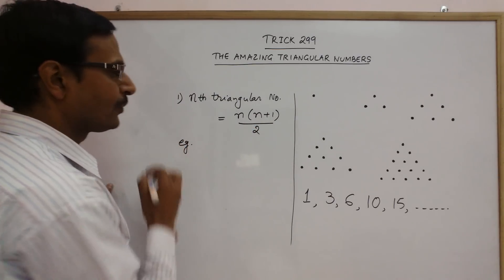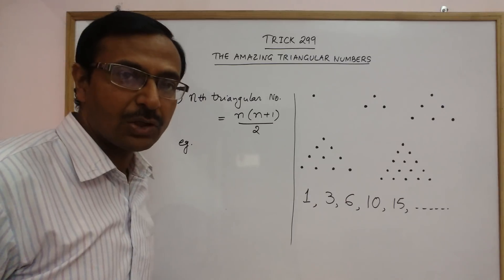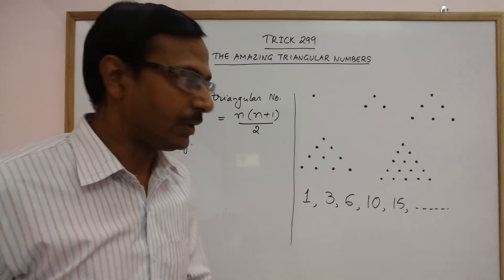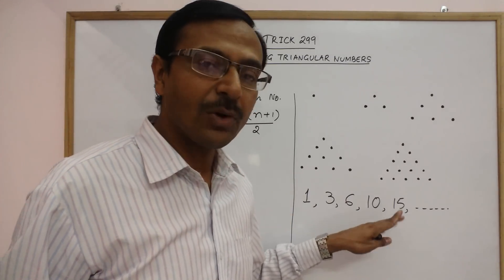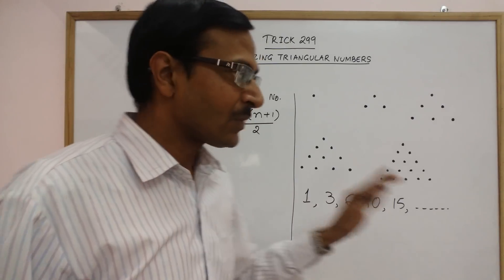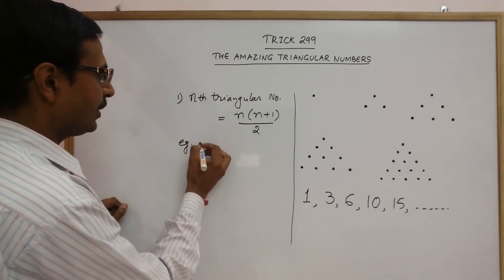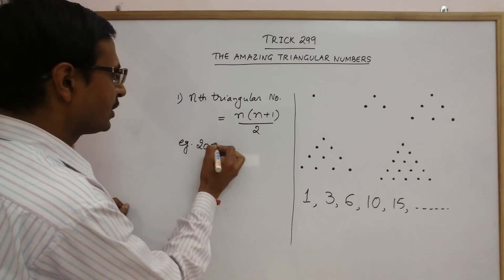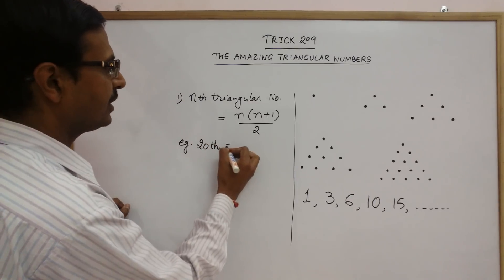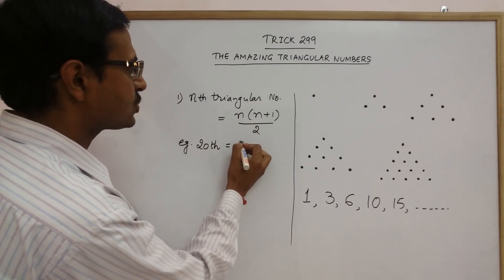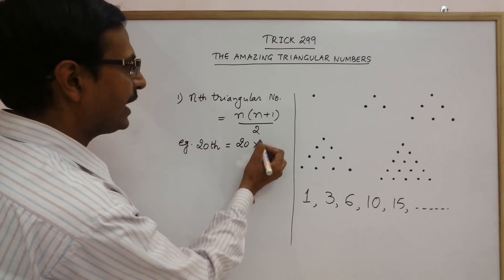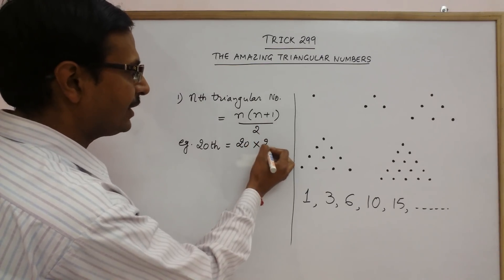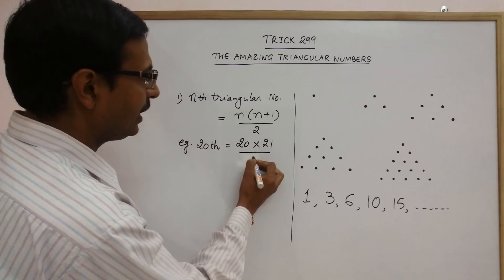Now, for example, suppose I want to know the value of the 20th triangular number. I mean the 20th term of this series. So, 20th triangular number is, just put the value of n as 20, then multiply it by 20 plus 1, 21, the next number and divide it by 2.